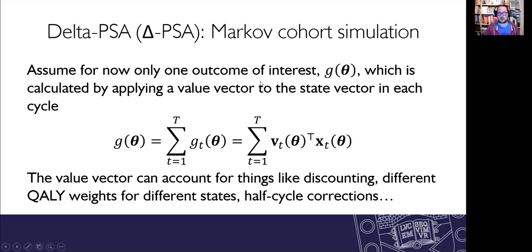If we just assume for now that we only have one outcome of interest, so just g, and that is calculated by applying a value vector v sub t to the state vector in each of the cycles. That value vector can account for things like discounting, different quality weights in different states and half cycle corrections.